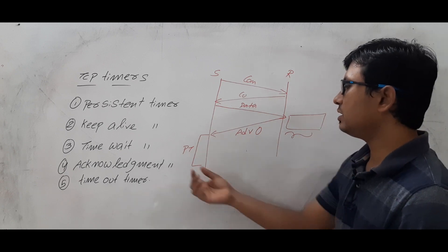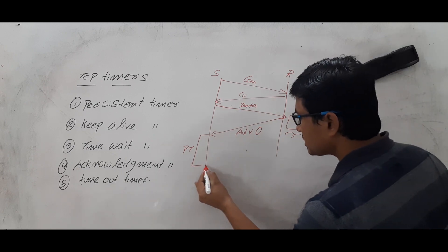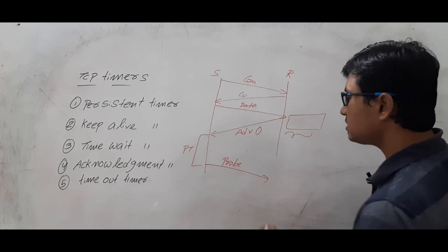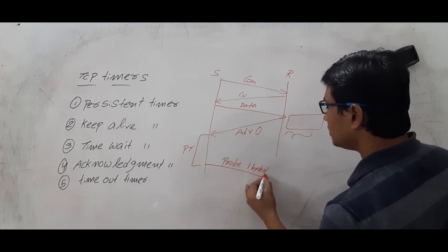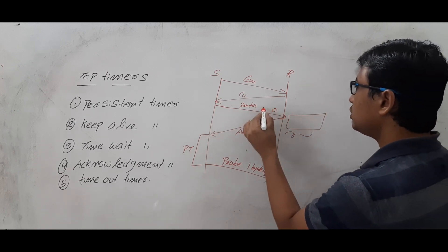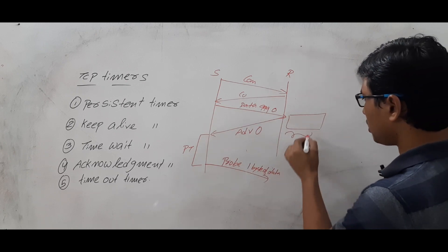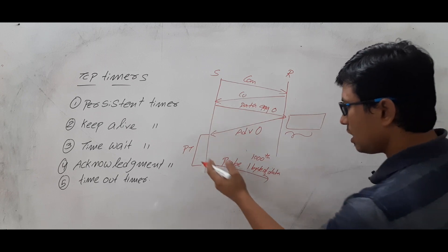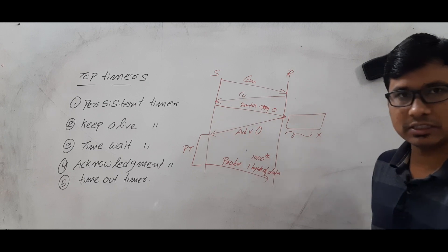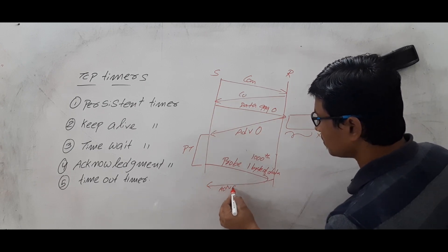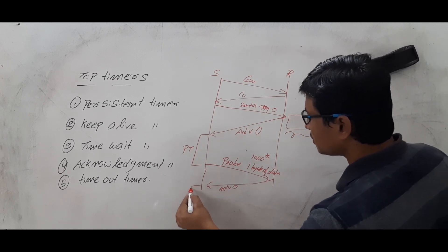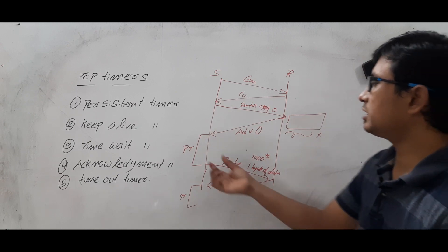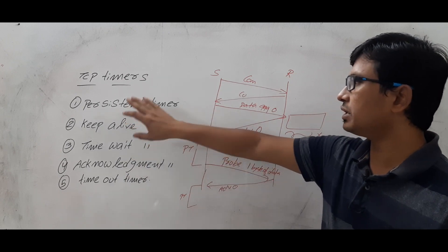The sender will wait for some amount of time — that time we call the persistent timer. Once it expires, the sender will send a probe packet consisting of one byte of data. For example, if bytes 0 to 999 are in the receiver, it sends the 1000th byte. The receiver will neglect it and send advertisement zero again. The sender keeps trying — waiting the persist time and sending a probe packet repeatedly. This is the persistent timer.